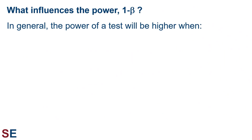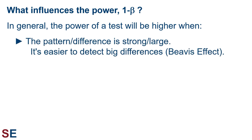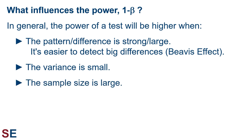In general, the power of a test will be higher when four things are true. First, the power of a test is higher when the pattern or difference we're looking for is stronger or larger — it's easier to detect big differences. This can lead to a statistical bias called the Beavis effect, where the patterns we're able to detect tend to be large in magnitude and we cannot detect genuine but smaller differences. Second, the power of a test is higher when the variance in our data is small. Some variance is due to genuine differences in the population, but some may be due to inaccuracies in measurement. We should always use the best measurement methods to minimize this extra noise. Third, the power of a statistical test is higher when the sample size is large.